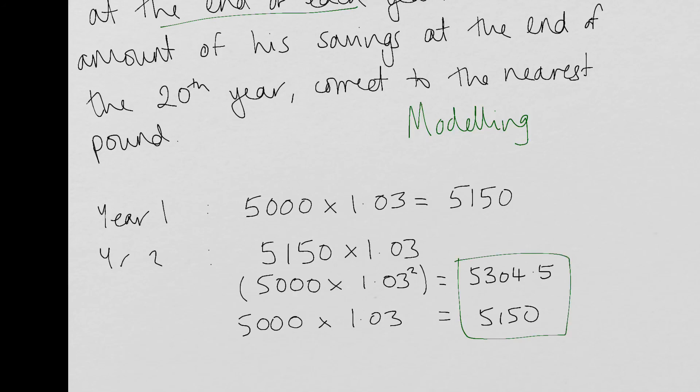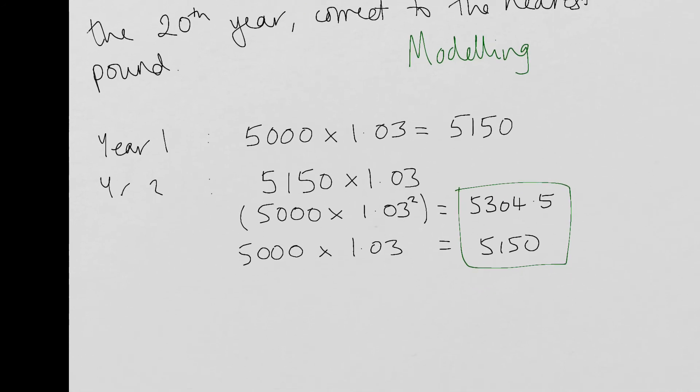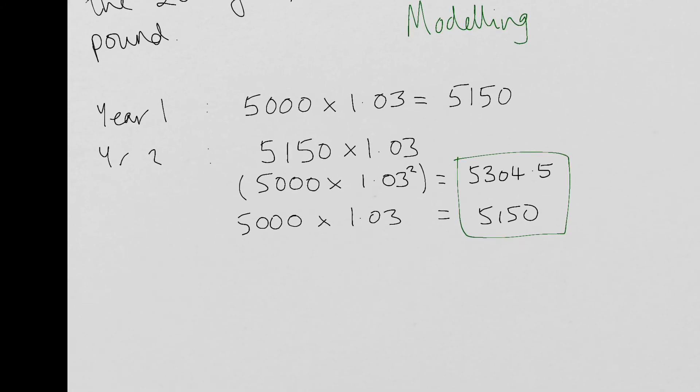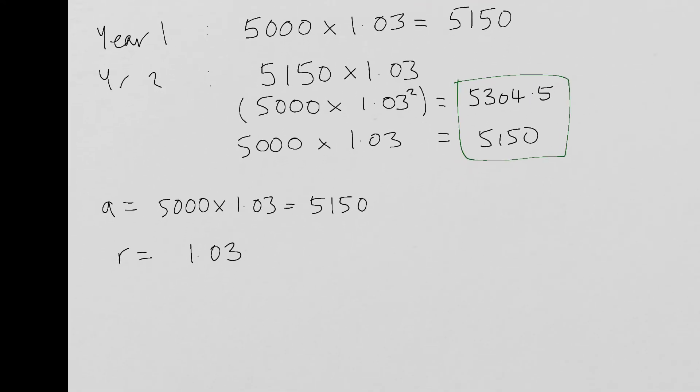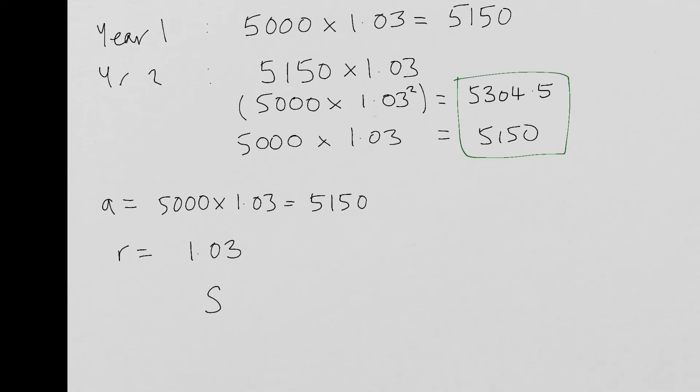So here, we've got those two amounts there. So what is occurring with this? What we've got is a geometric function. The first term is going to be this £5,000 times by 1.03, which is this £5,150. Then we've got this common ratio. And this common ratio is going to be that multiplying by 1.03 each time.